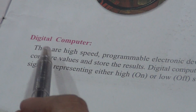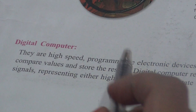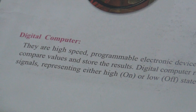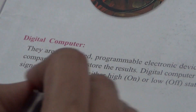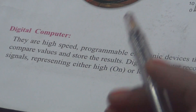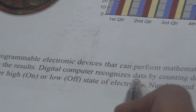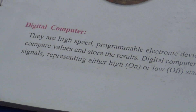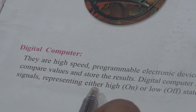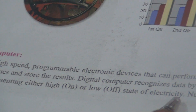Now the second is the Digital computer. They are high speed — inki speed bahut zyada hoti hai — programmable electronic devices that can perform mathematical calculations. Ye bahut zyada speed se work karta hai, programmable hota hai, mathematical calculations easily perform kar sakta hai, compare values and store the results. Digital computer recognizes data by counting discrete or distinct signals, representing either a high or low state of electricity — aur electricity ki jo state hai, wo high hai ya low hai, isko easily represent karta hai.